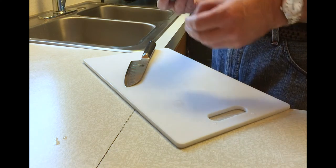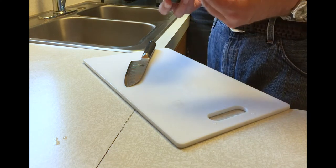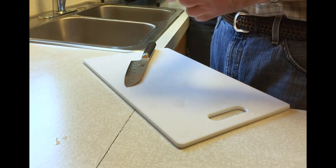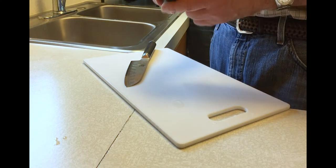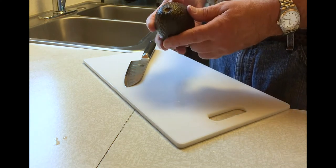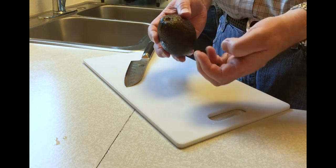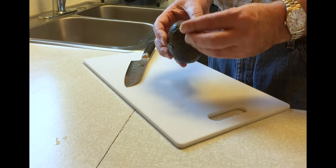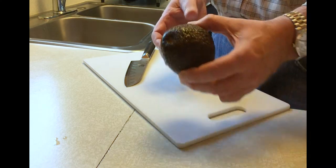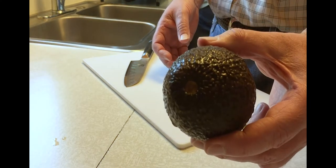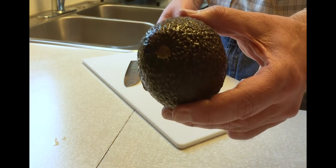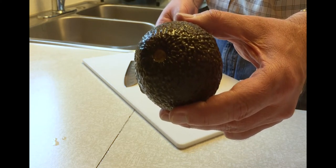One of the things you can tell if an avocado is going to be ripe is for one thing it's not too squishy, it's firm but it's got a little give. If you pull the little knob out of here, then it's green inside.